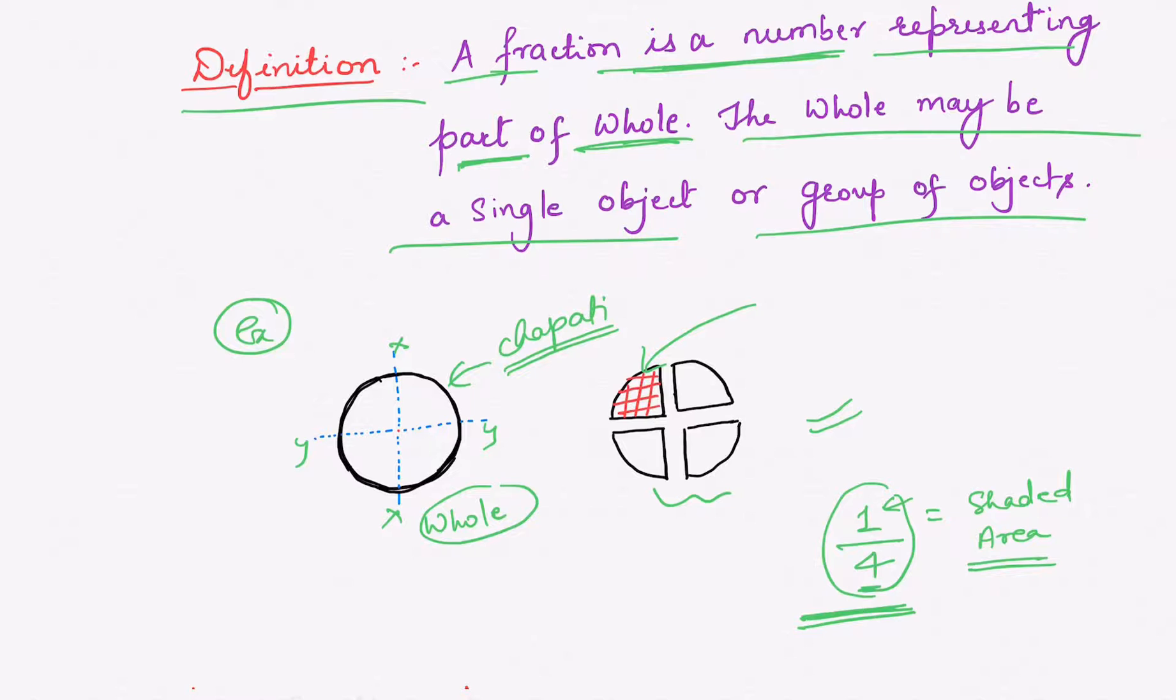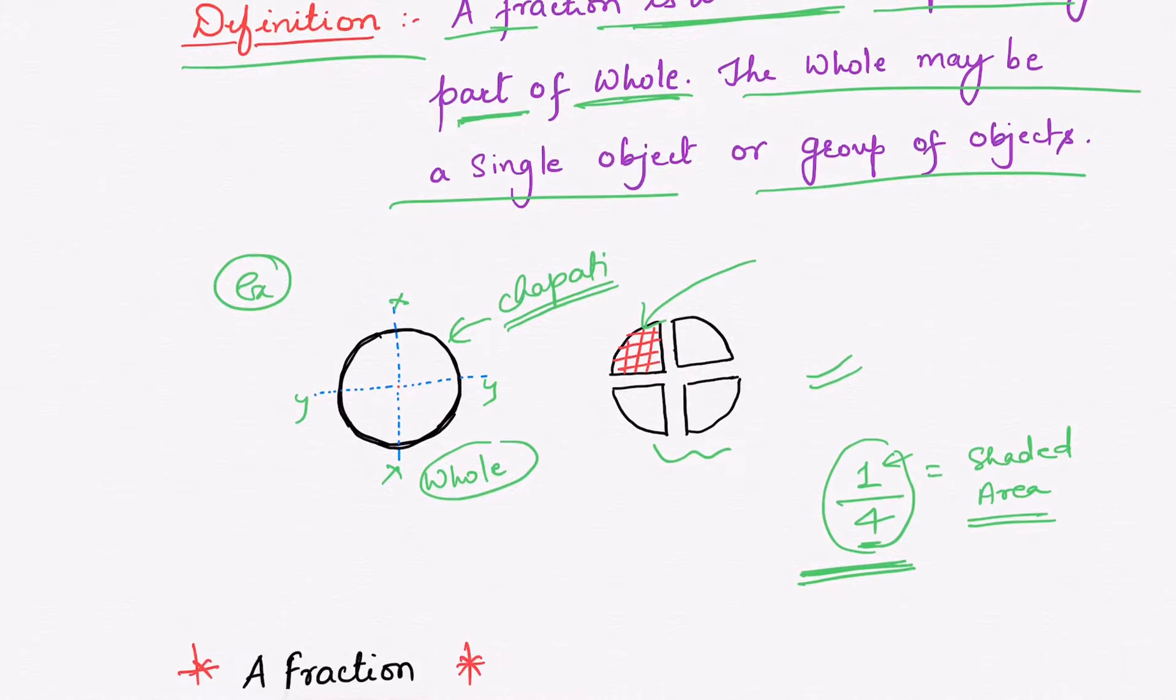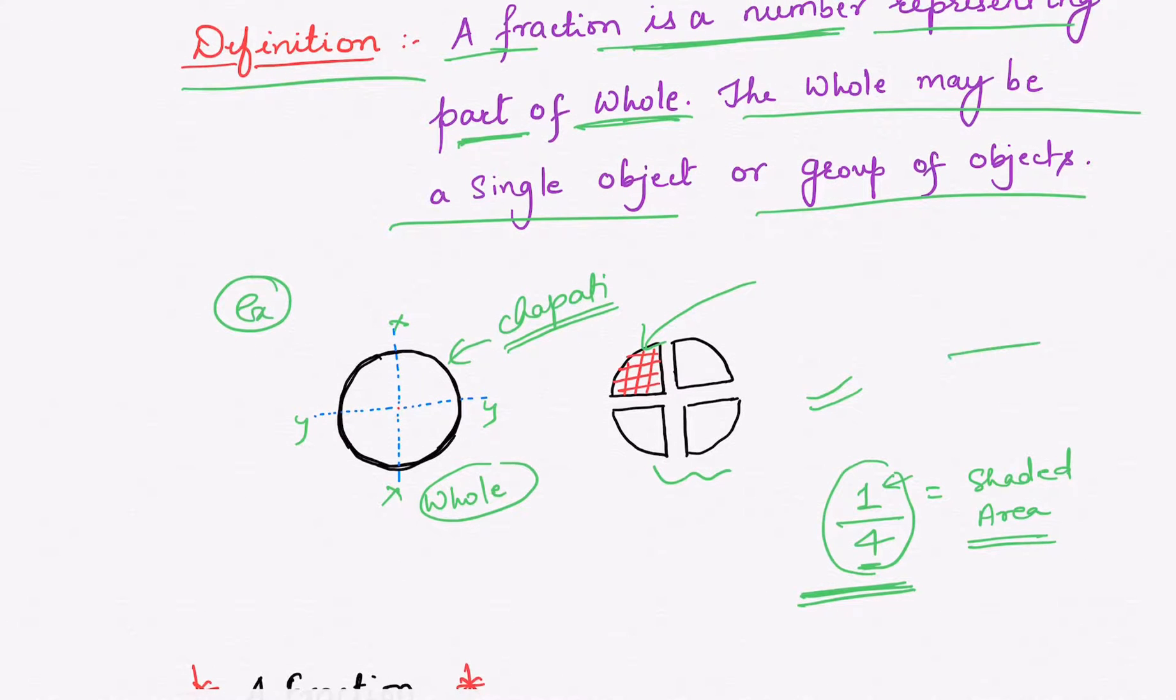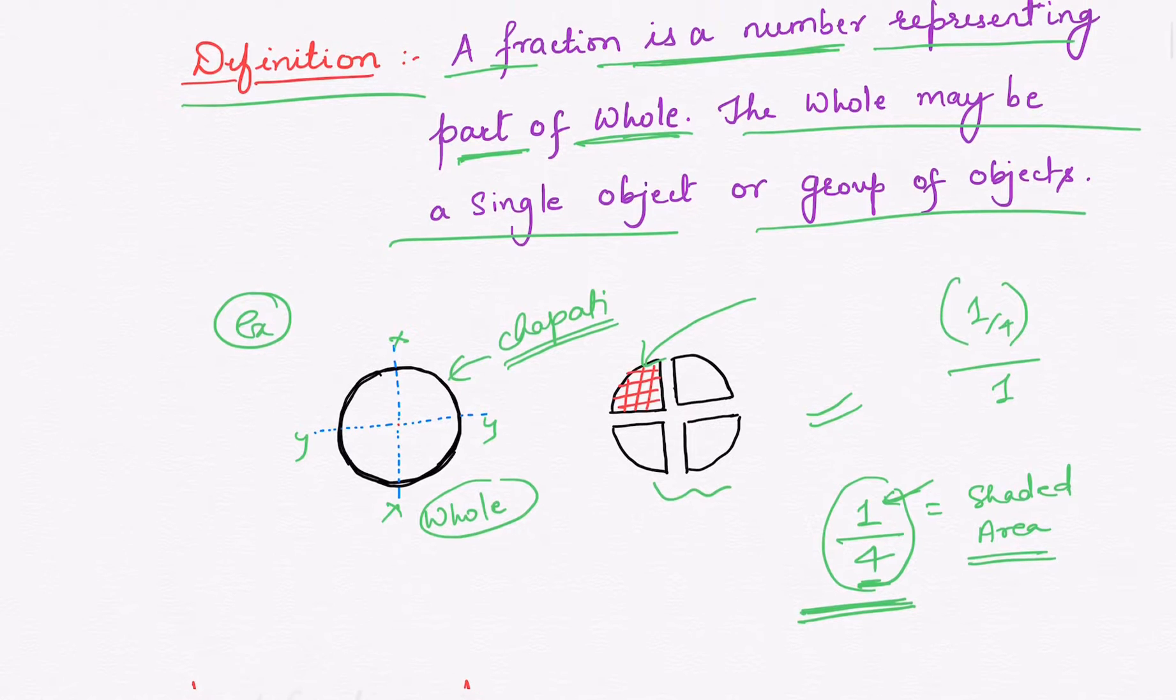It means out of one whole part, one fourth part is shaded. So, this also means that out of one whole part, one fourth of part is shaded. Or we can say that out of four part, one part is shaded. So, here the fraction one by four is used to represent this particular shaded region.